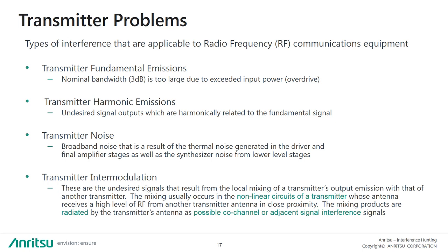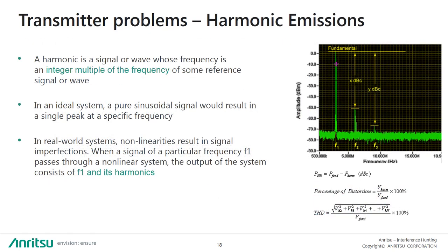A harmonic is a signal whose frequency is an integer multiple of some reference signal. In an ideal system, a pure sinusoidal signal results in a single peak at its specific frequency. In real-world systems, however, nonlinearities of transmitter components result in signal imperfections. When a signal of some fundamental frequency passes through a nonlinear system, the output consists of the fundamental and its harmonics, as shown in the picture on this slide. Testing for harmonic distortion is performed with only one signal at the input, which is different from intermodulation distortion.